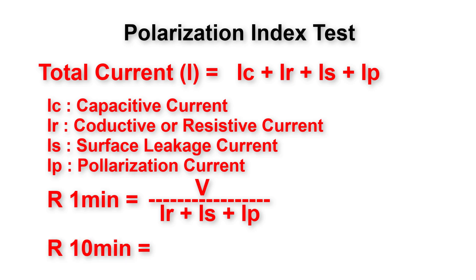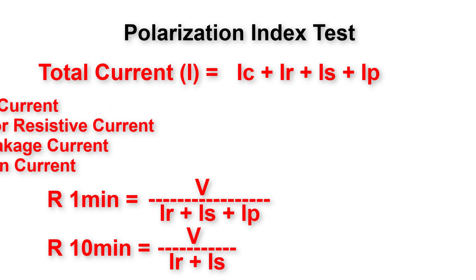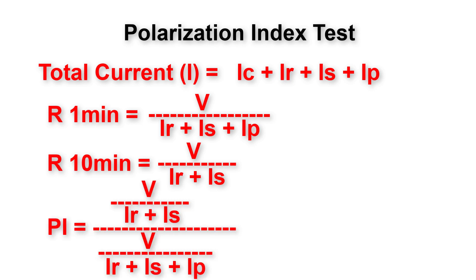The mega reading at 10 minutes is without polarization current, so R(10 min) = V / (Ir + Is). Therefore the polarization index PI equals R(10 min) / R(1 min), which equals [V / (Ir + Is)] / [V / (Ir + Is + Ip)]. Simplifying, this gives us: (Ir + Is + Ip) / (Ir + Is), or equivalently 1 + Ip / (Ir + Is).